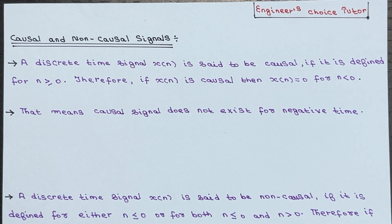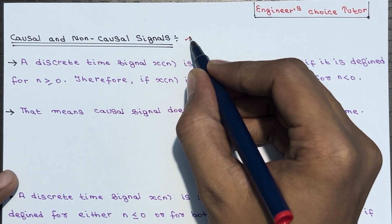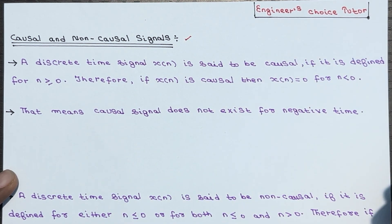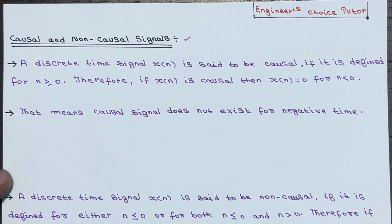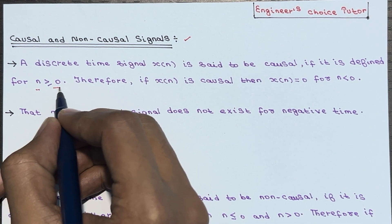Hi everyone. In this lecture we will be discussing the concepts of causal and non-causal signals. A discrete time signal denoted as x of n is considered to be causal if it is defined for n greater than or equal to 0.